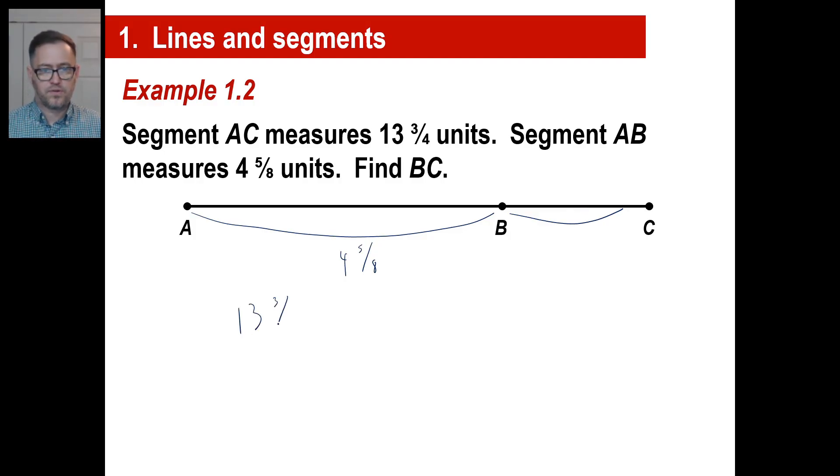We got 13 and 3 fourths minus 4 and 5 eighths. And this is one where we're going to have to go, oh, you can't subtract 5 eighths. Well, we'll see if we can or not. 3 fourths and 5 eighths. Well, look at here. We got 13 and what's the common denominator? It'll be 8. And that's going to be 5 eighths. And then 3 fourths is the same as 6 eighths, right? Okay. So 13 minus 4 is 9. And 6 eighths minus 5 eighths is 1 eighth. So we actually were able to subtract that without having to borrow. Good.